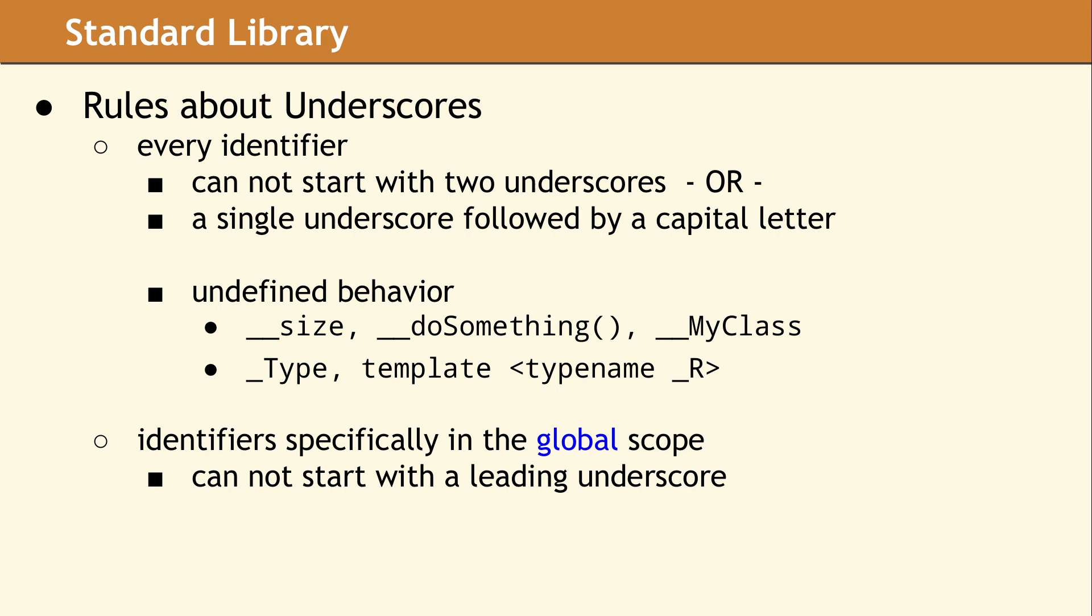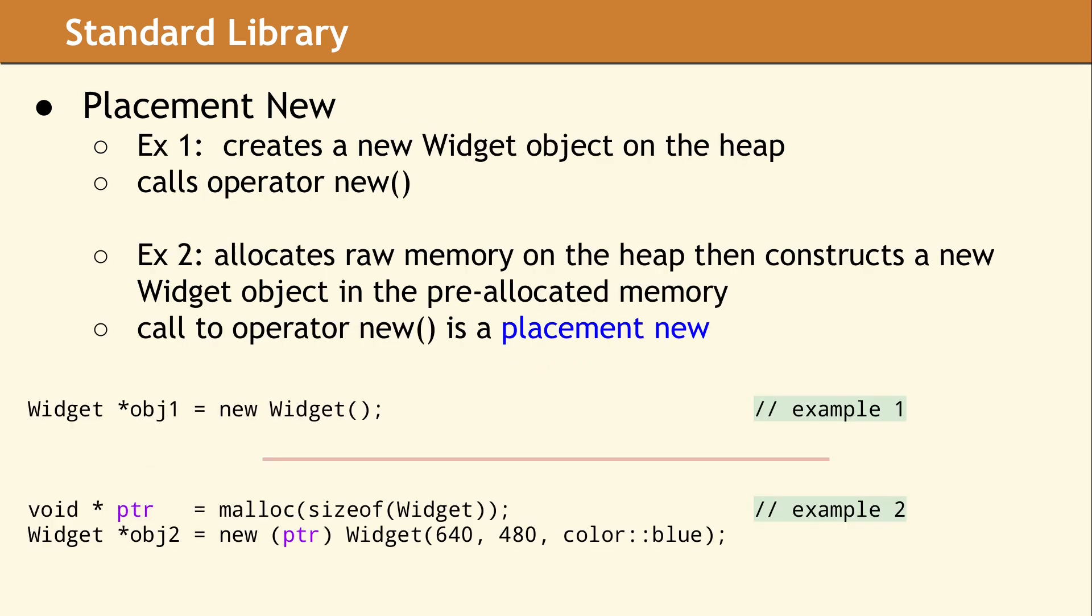But if you have looked at code from any standard library implementation, you will notice they use leading underscores everywhere. So why can they break the rules? Actually, they're not. Implementers of the standard library are required to use a leading underscore for their identifiers to avoid naming collisions with user application code. This is not just a coding style, but a design constraint they must follow. The fact it makes the code harder to read is simply one of the challenges of working on the standard library.